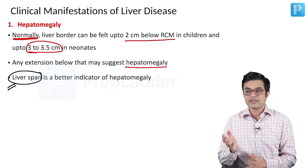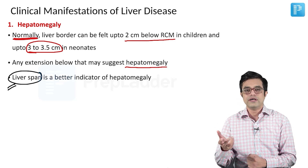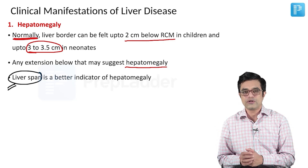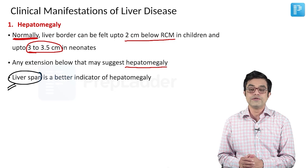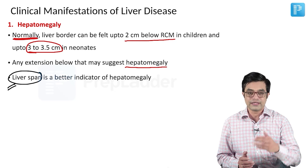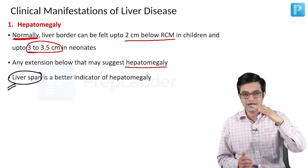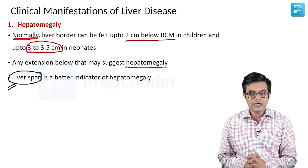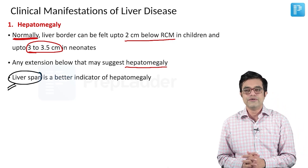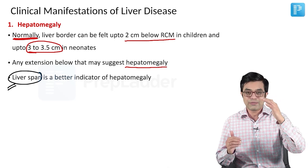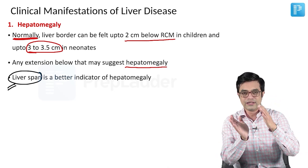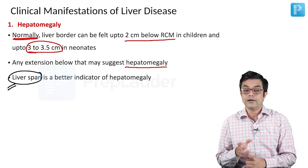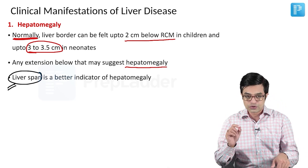The lower liver border alone can be misleading. There is a condition called Riedel's lobe, which can be palpable normally and produce apparent hepatomegaly. Sometimes, due to visceroptosis — as seen in rickets — the liver can move slightly downward. If you check the liver span, the overall span will be found to be normal. Similarly, if the right-sided diaphragm is positioned lower, you may find 3 to 4 centimeters of liver palpable, but the liver span will again be normal.